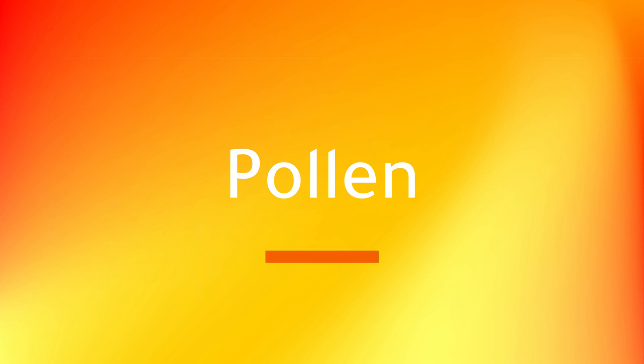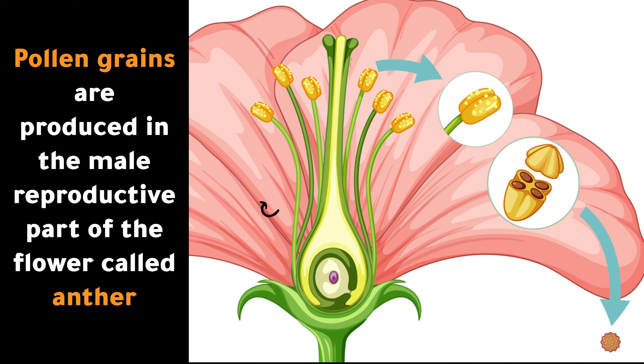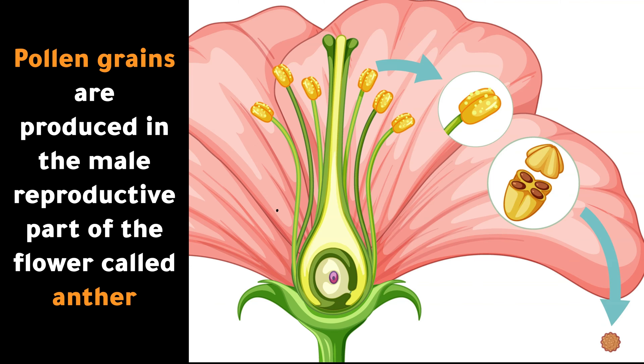Pollen grains are produced in the male reproductive part of the flower called the anther.